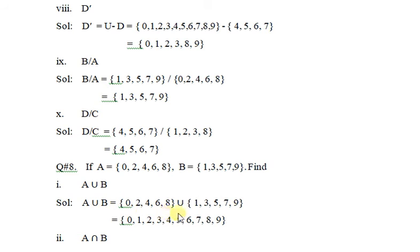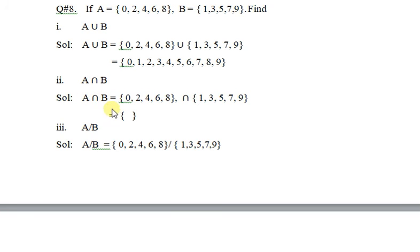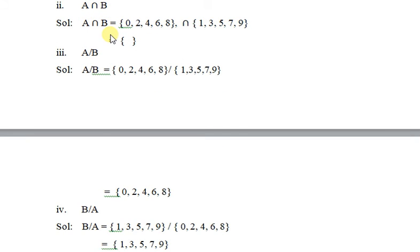Question number eight: set A and set B are given. Find A union B — write values of set A and set B in proper sequence. Part 2, A intersection B: there are no common elements in set A and set B, so the answer is the empty set. For A by B, set of A divided by set of B — there are no common elements, so write just set of A. For B by A, set of B divided by set of A — write just set of B in the answer.